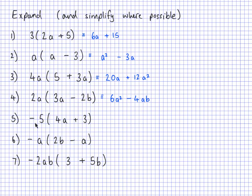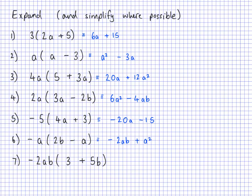This time I've got a number on the outside, but it's negative — negative 5. Negative 5 multiplied by 4a is negative 20a. And then negative 5 times positive 3 is negative 15. Next one: negative a times 2b. Negative a times 2b gives a negative answer, so that's negative 2ab. And I also have negative a times negative a, which gives a positive answer — and a times a is a squared — so positive a squared.